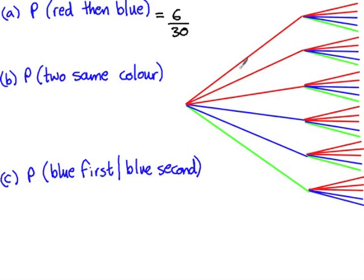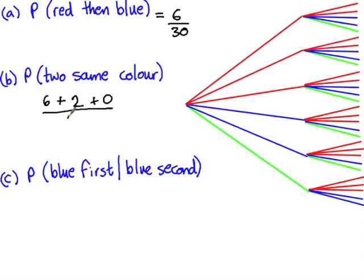The probability that I have two the same colour: six branches go red-red, two go blue-blue, and none go green-green out of 30. So this is eight out of 30. And then finally we have a conditional probability.